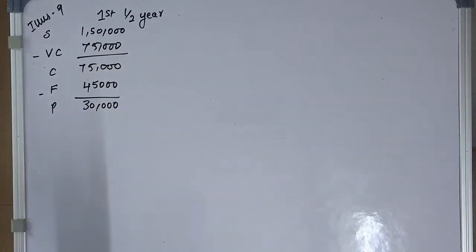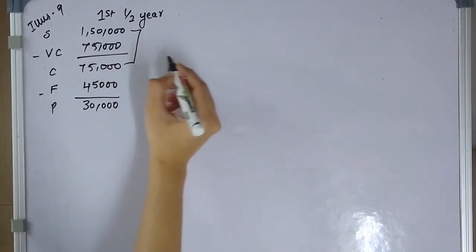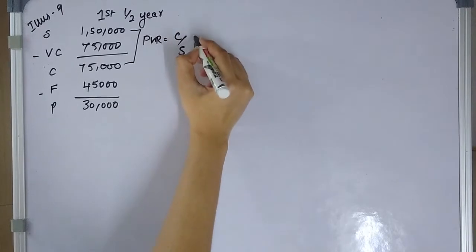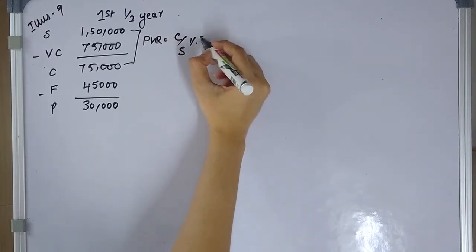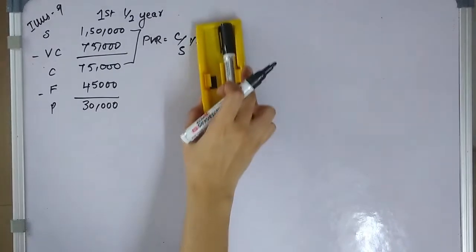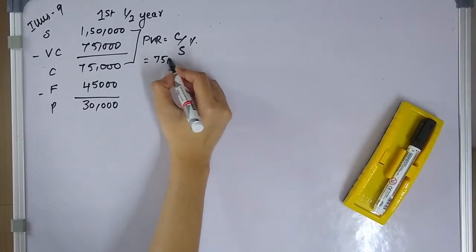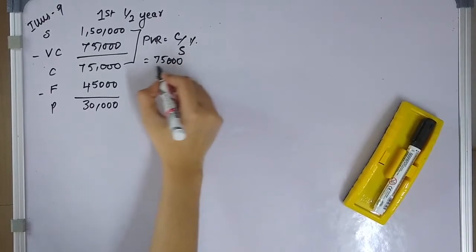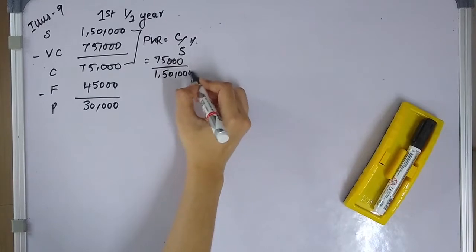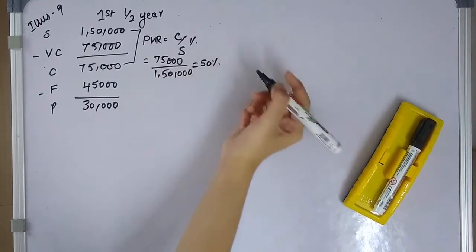From the contribution and sales, the PV ratio is contribution divided by sales: 75,000 divided by 150,000, which gives us a PV ratio of 50%.